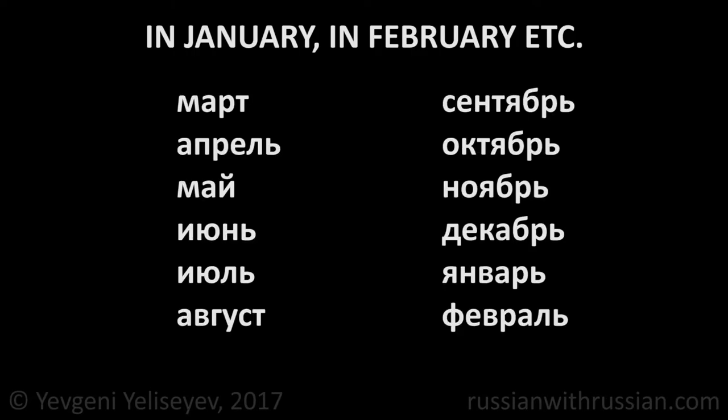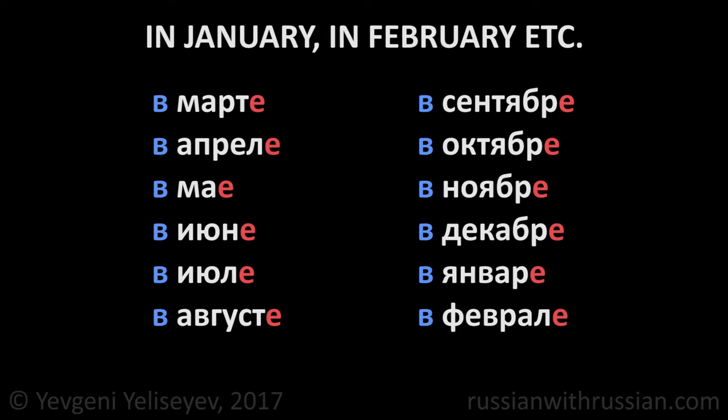In order to say "in January," "in February," and so on, we use the preposition В, meaning "in," and put the name of the month in the prepositional case. That is, all names get the ending -е. The names of spring and summer months don't change the stress.